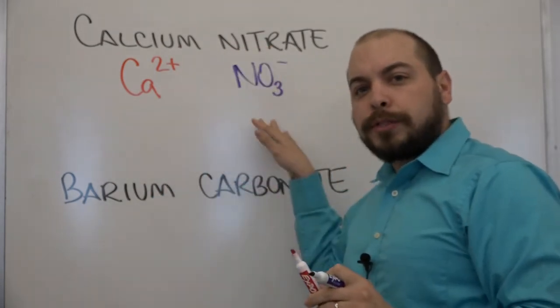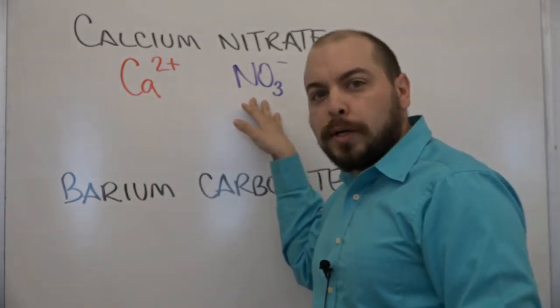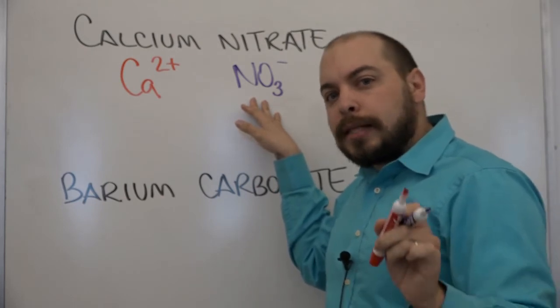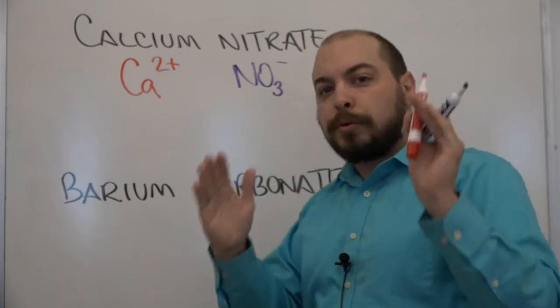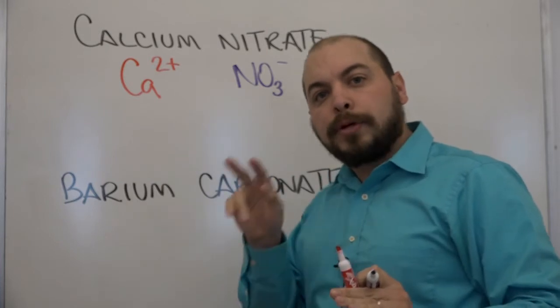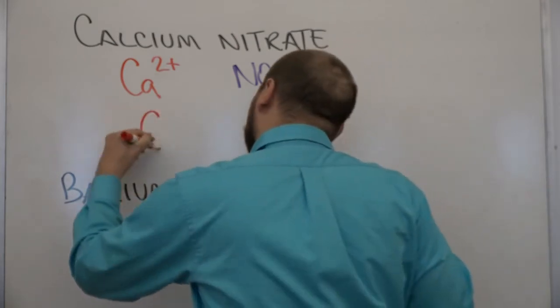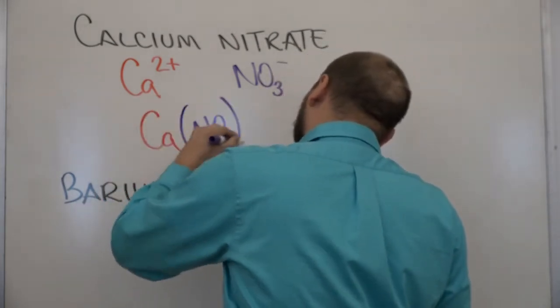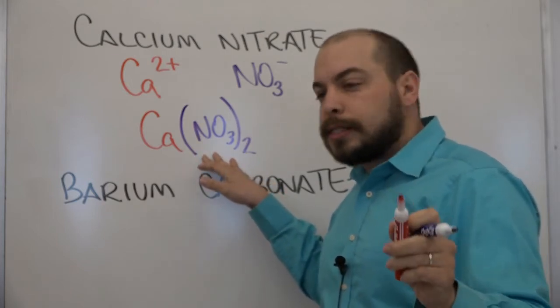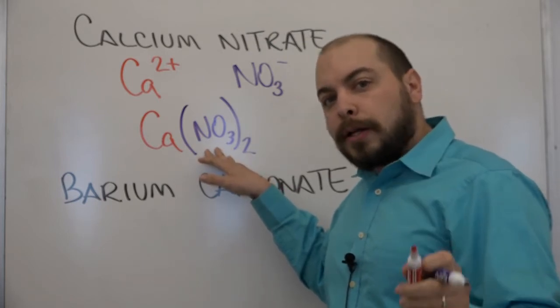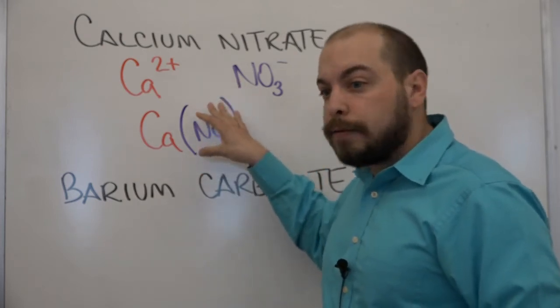Now in this case when we do the criss cross method something interesting happens. We end up with one calcium but two nitrate ions. It's not that we're actually doubling the number of atoms we're simply doubling the number of ions. So what we're going to do is we're actually going to put a parenthesis around the nitrate ion and put a subscript 2 outside of those parentheses. So this is the correct formula for calcium nitrate. Again, this tells us that in fact we have two polyatomic ions of the nitrate variety. So in other words we have two nitrate ions for every one calcium.